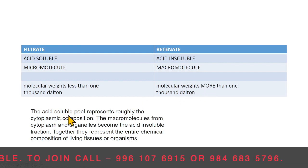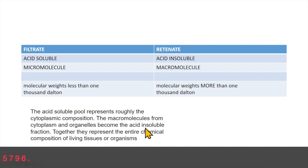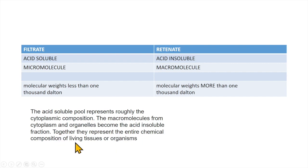The acid soluble pool represents roughly the cytoplasmic composition. The macromolecules from the cytoplasm and organelles become the acid insoluble fraction. Together they represent the entire chemical composition of living tissue. So macromolecules can be seen in the acid insoluble fraction, while micromolecules from the cell can be seen in the acid soluble pool.